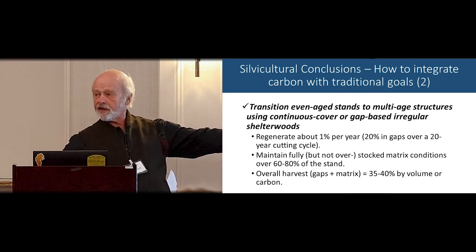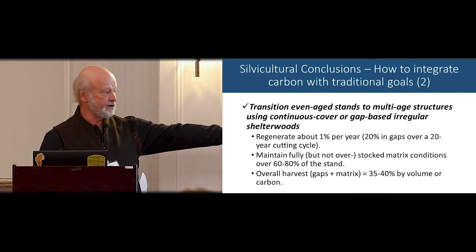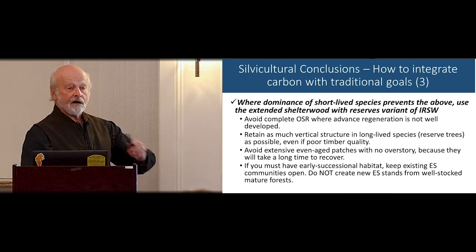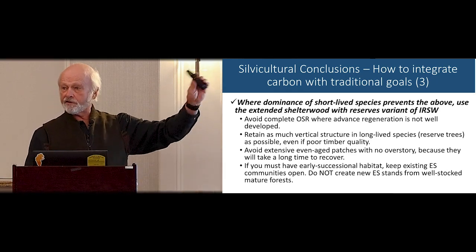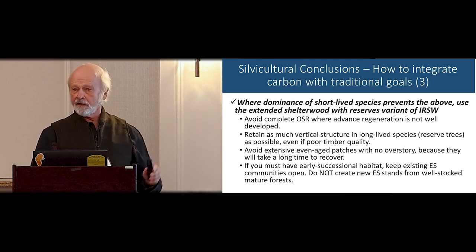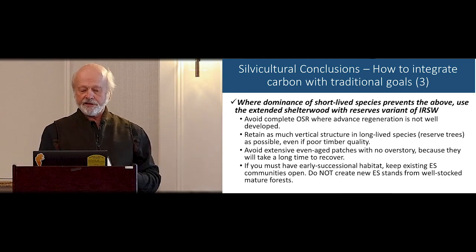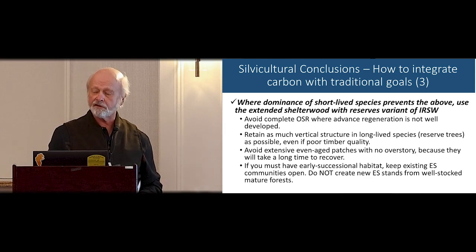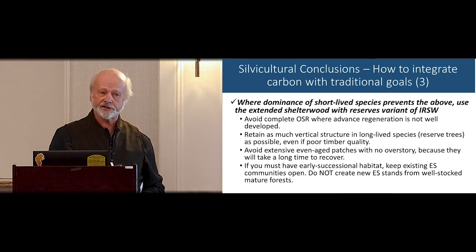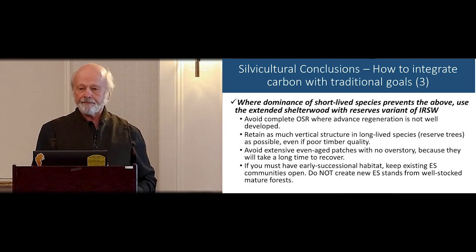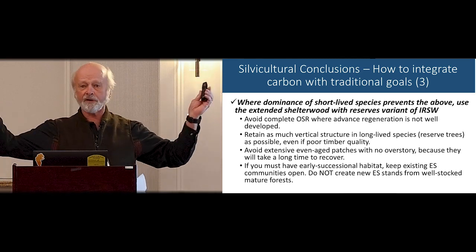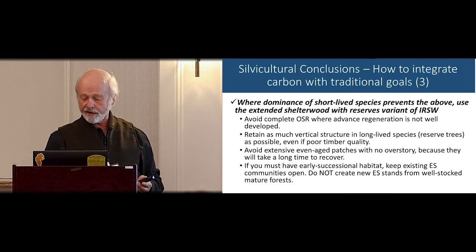I can't resist thinning through the matrix in these stands while you're in there, and so you end up a little higher, but you're still going to have that fairly short-term recovery. If you can't do that and you have a situation where short-lived species dominate, then go echo what Ali said: try to avoid complete overstory removals, especially where you don't have well-stocked advanced regeneration. That first stand had big old pines we didn't cut a single one of, and that stand has excellent structure — not necessarily full leaf area, even if they're poor timber quality.